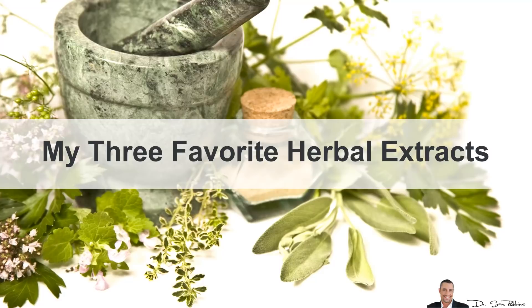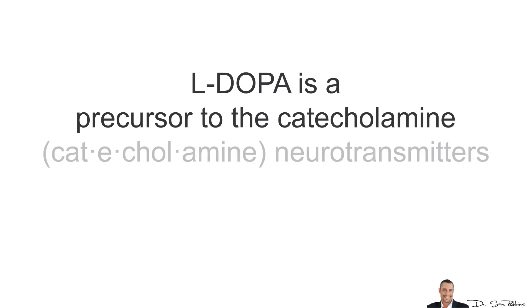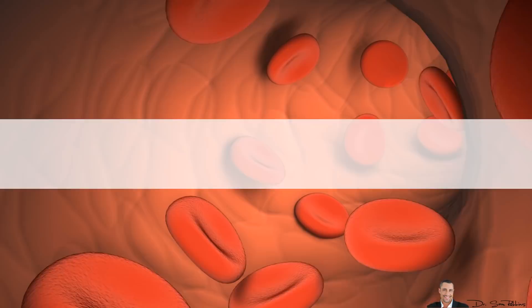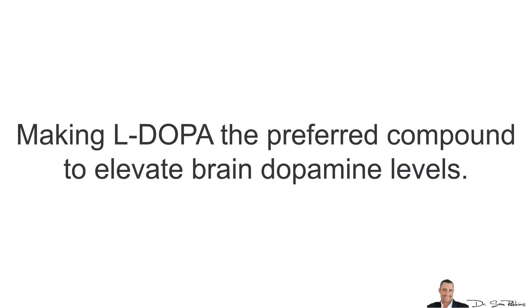So let's get started with the three favorite herbal extracts. The first one is Velvet Bean Extract. More specifically, the best is 20% Catecholamine with 15% L-DOPA Extract. L-DOPA is a precursor to the catecholamine neurotransmitters dopamine, norepinephrine and epinephrine. While L-DOPA can cross the blood-brain barrier, dopamine cannot, making L-DOPA the preferred compound to elevate brain dopamine levels.